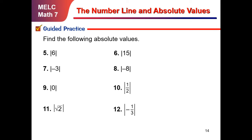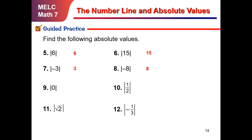Let's consider this guided practice — find the following absolute values. The absolute value of 6 is 6. The absolute value of 15 is positive 15. The absolute value of negative 3 is positive 3. The absolute value of negative 8 is positive 8. The absolute value of 0 is 0. The absolute value of one-half is still one-half. The absolute value of the square root of 2 is the square root of 2. The absolute value of negative one-third is one-third.